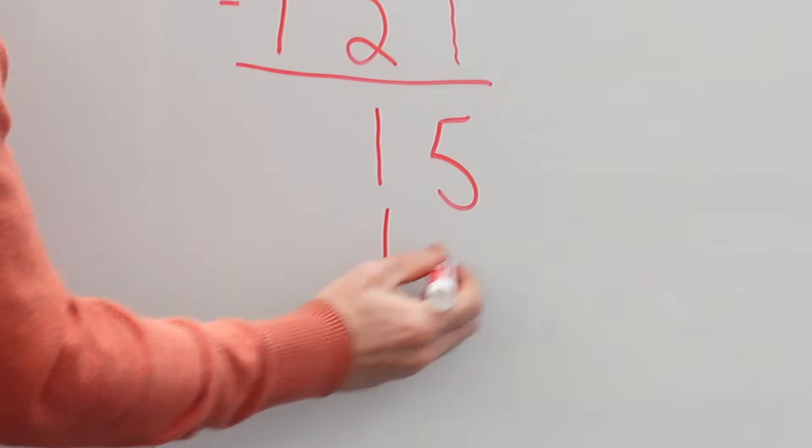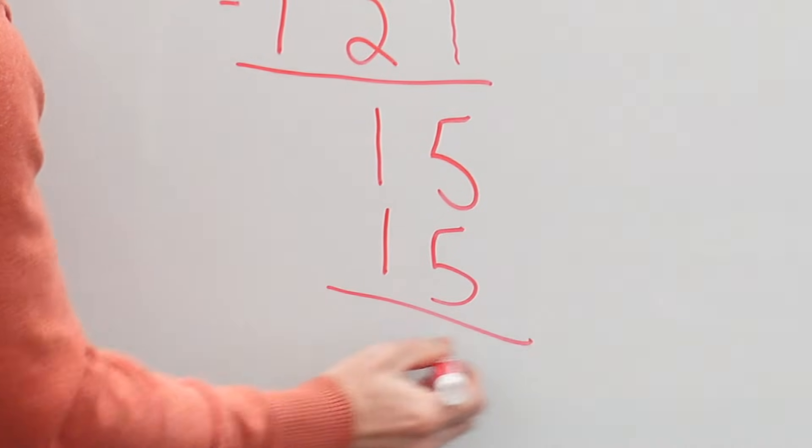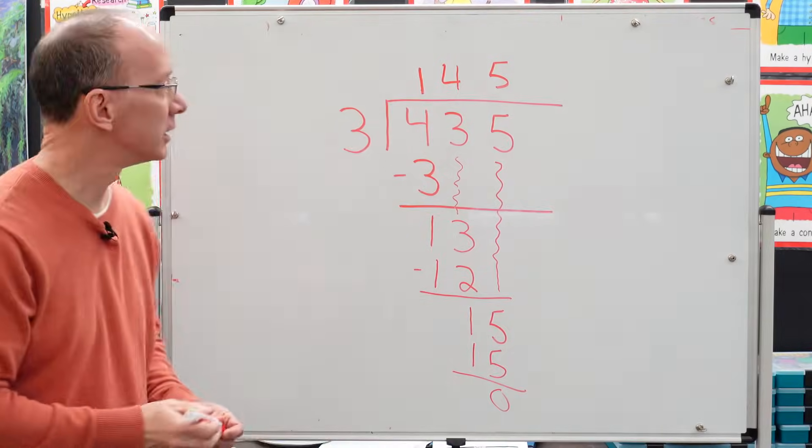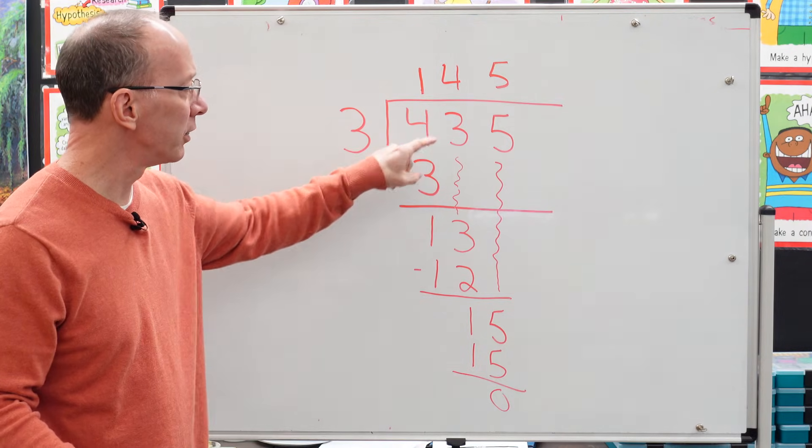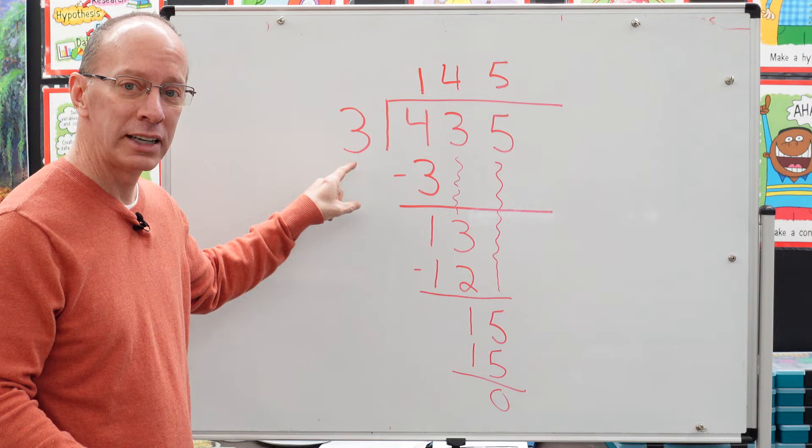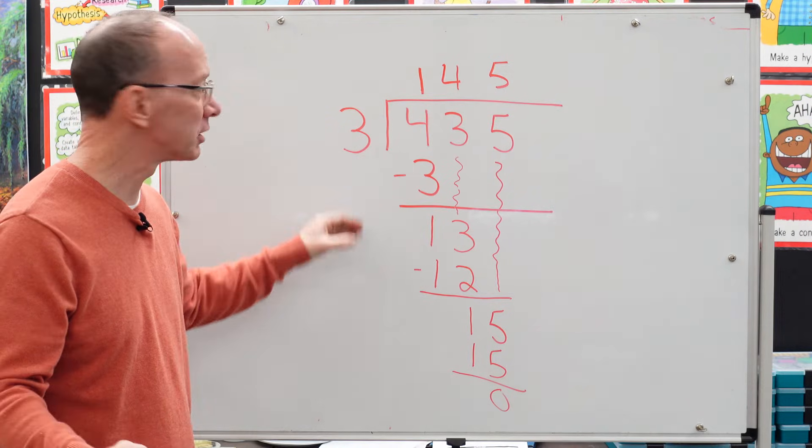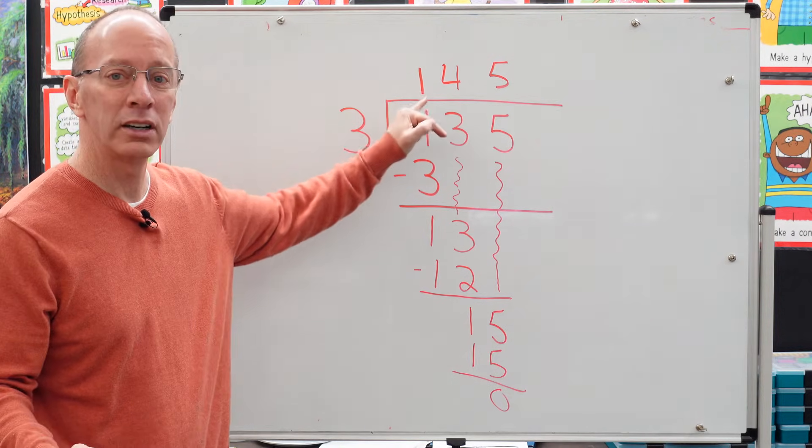Five times three is 15. Zero. All right. So this problem right here, 435 divided by three, how many equal parts are there going to be? There's going to be three equal parts, and it's 145.